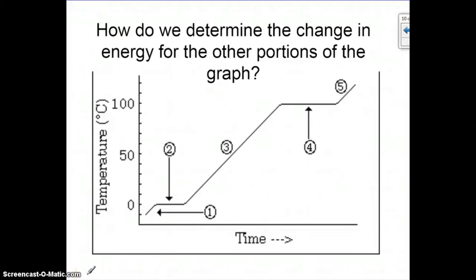Alright, so in the last podcast we talked about how to calculate the energy change for these diagonal portions of the graph, and we decided that Q equals mc delta T was the best way to go.